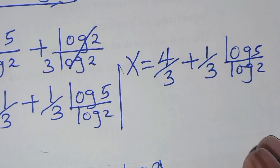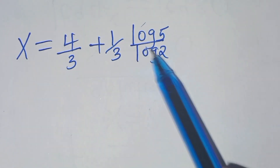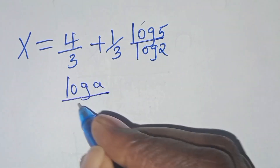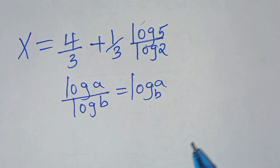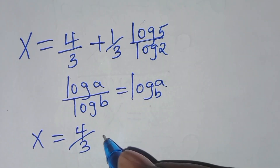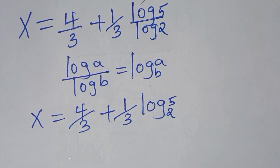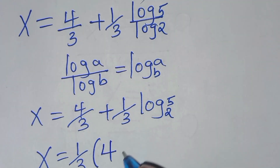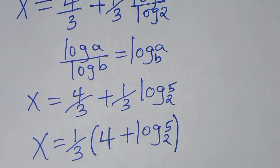Proceeding from here, we have x is equal to 4 over 3 plus one-third of log 5 divided by log 2. Since log 5 divided by log 2 is in the form of log a divided by log b, which we can express as log a to base b, this becomes log 5 to base 2. Since one-third is common, we can factor it out, giving x equals one-third times the bracket 4 plus log 5 to base 2. So this is the value of x.